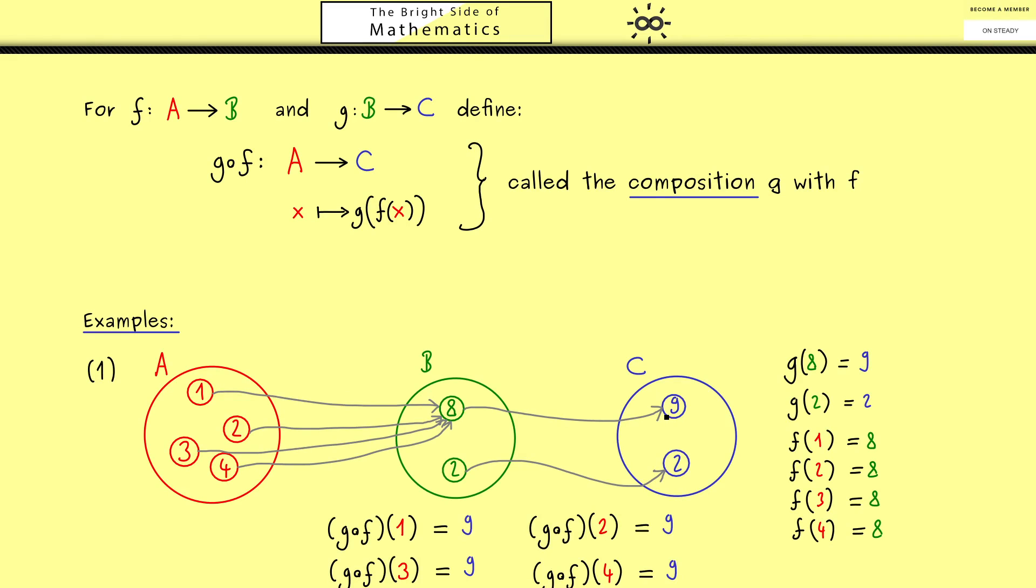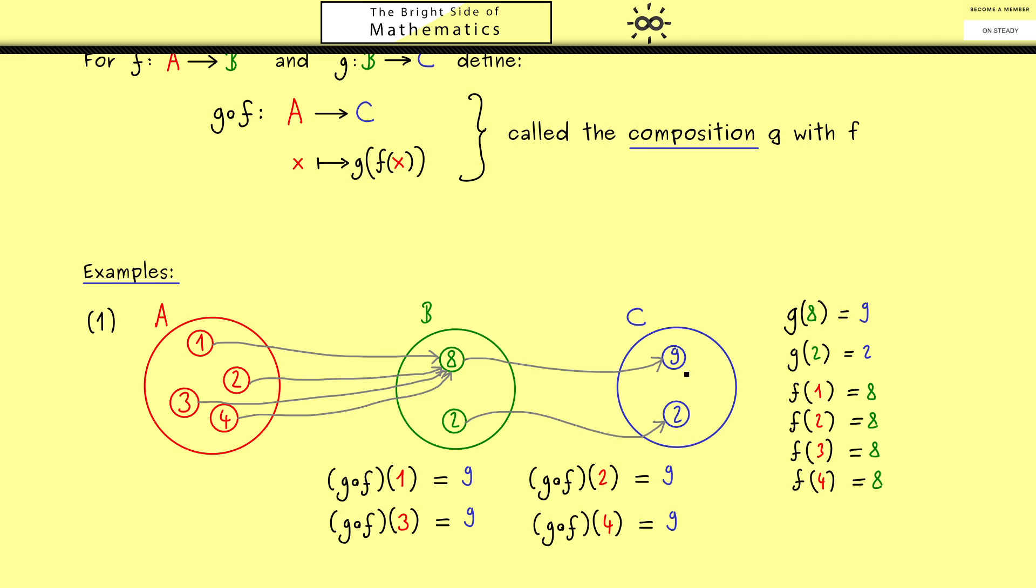Of course also for the other inputs we land at 9 in the end. Here you see, and please keep that in mind, we read the composition from right to left. So we first apply f and then we apply g.